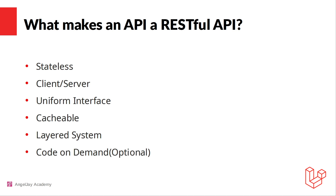Now let's move on — what makes an API a RESTful API? There are five constraints which are necessary to make it a RESTful API, and a sixth one that is optional: code on demand. The first constraint is that it needs to be stateless, meaning the state is contained in the request itself — the server doesn't store anything about the client. You also need a client and a server; in our case the client is Next.js and the server is Laravel.